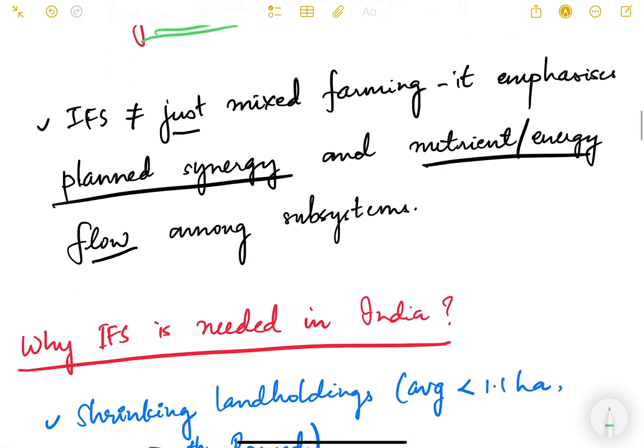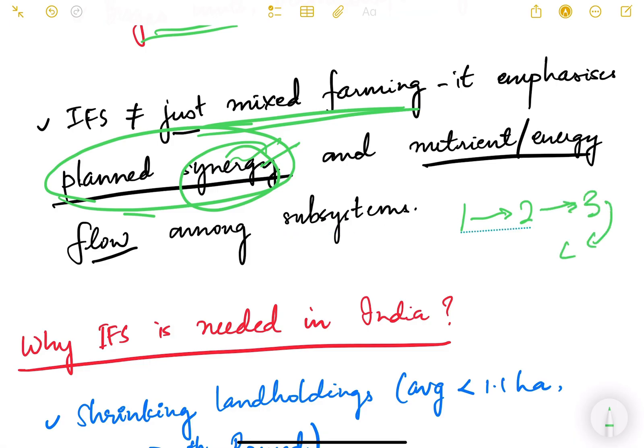It is called integrated farming because it is done at one location in an integrated way. Understand that IFS is not equal to mixed farming. It is not just about having multiple activities at one place, but it emphasizes planned synergy. Synergy is very important - one activity helps the other, there is nutrient flow, energy flow, material flow from one system to another. Synergy is very important.